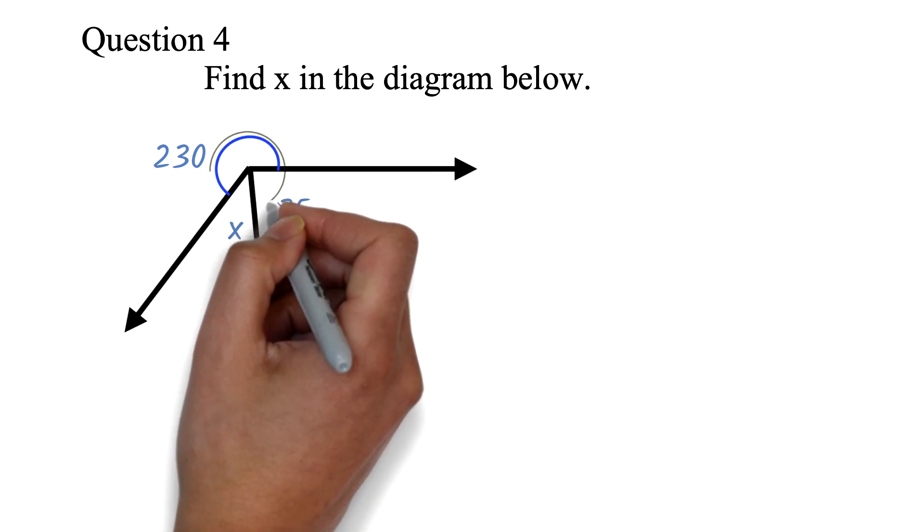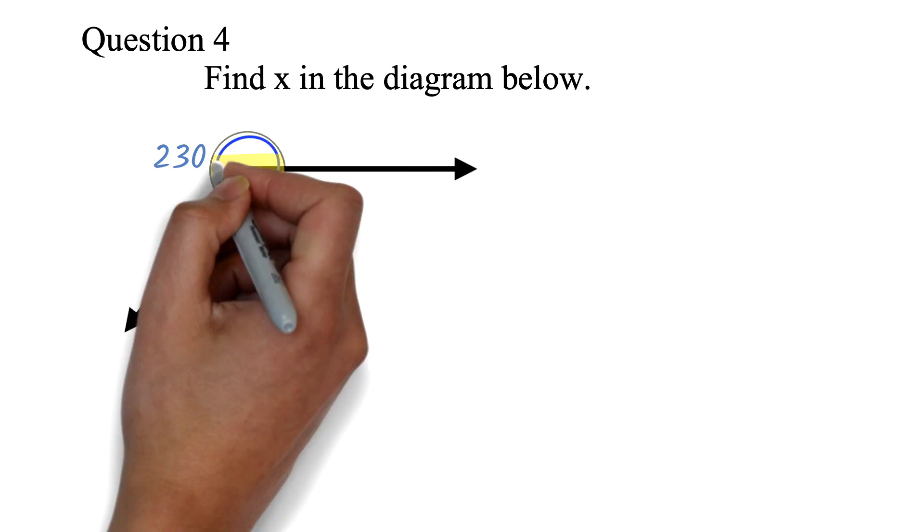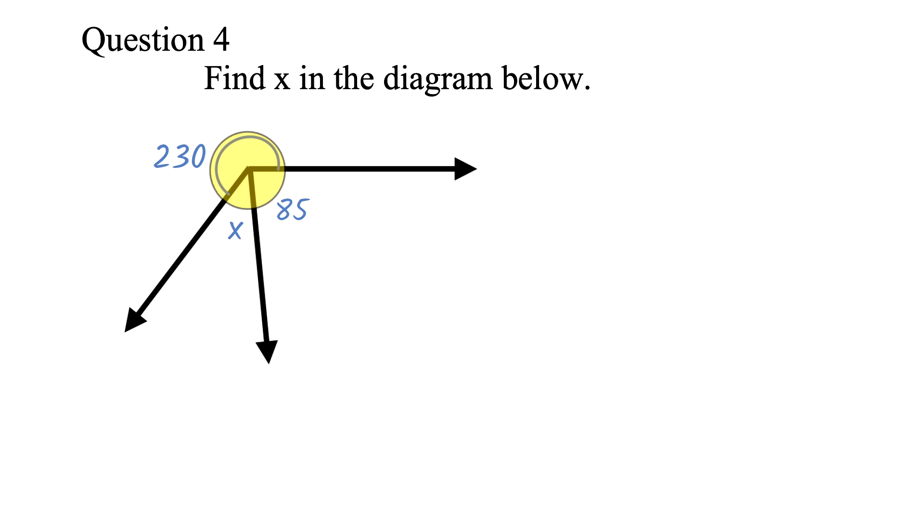The work here is being able to identify that we are dealing with a full angle. A full angle is 360 degrees. Once you know that, you'll just add everything and equate it to 360. Then solve the resulting equation.